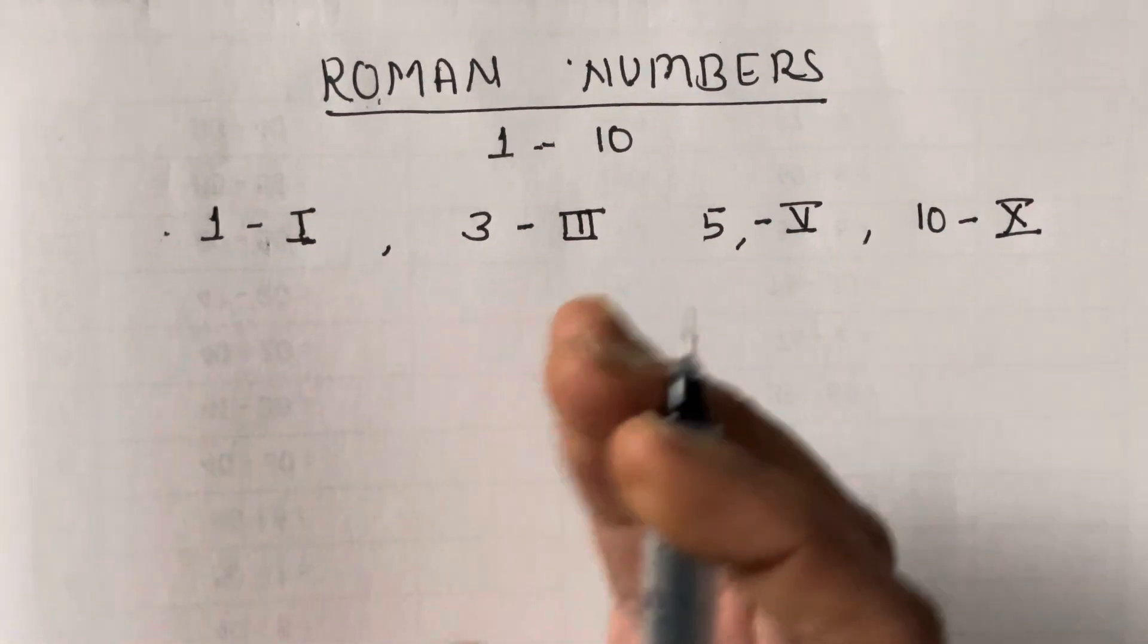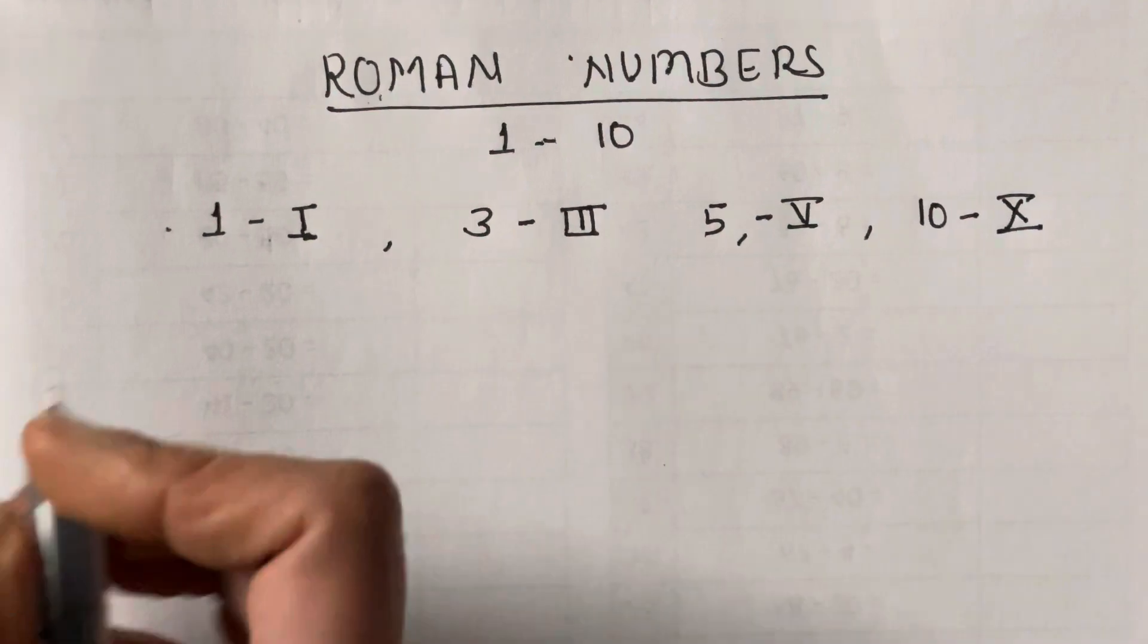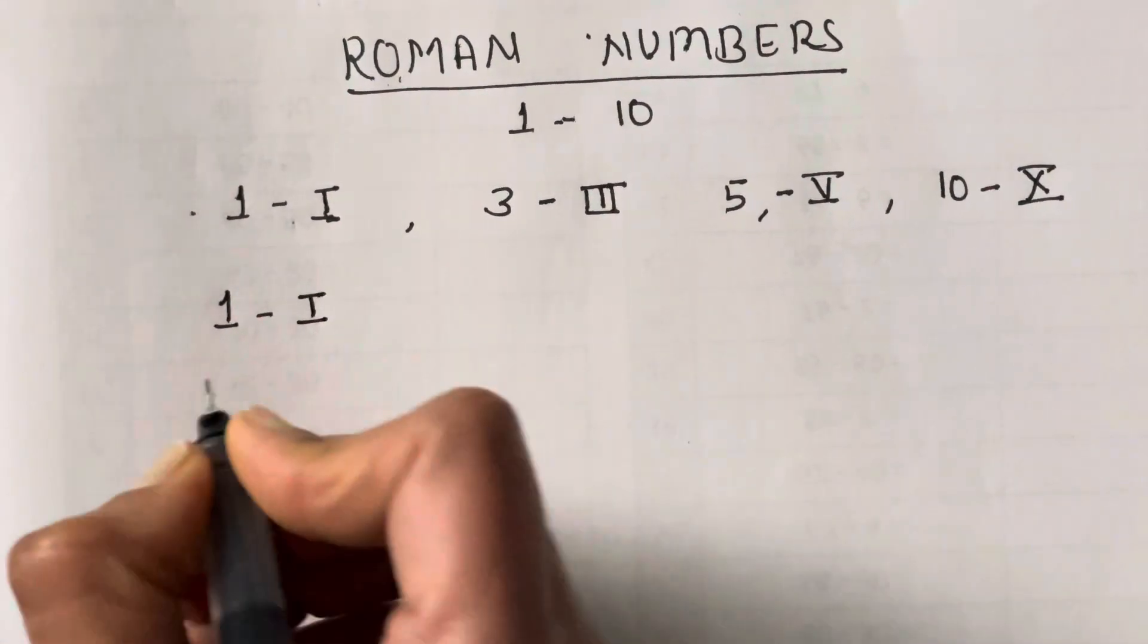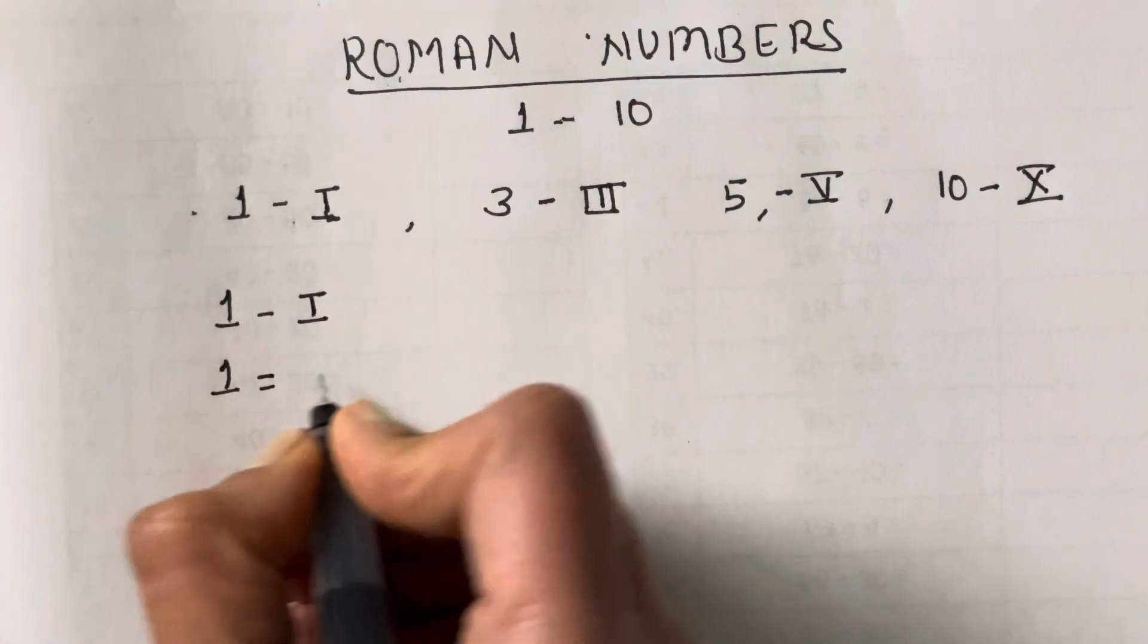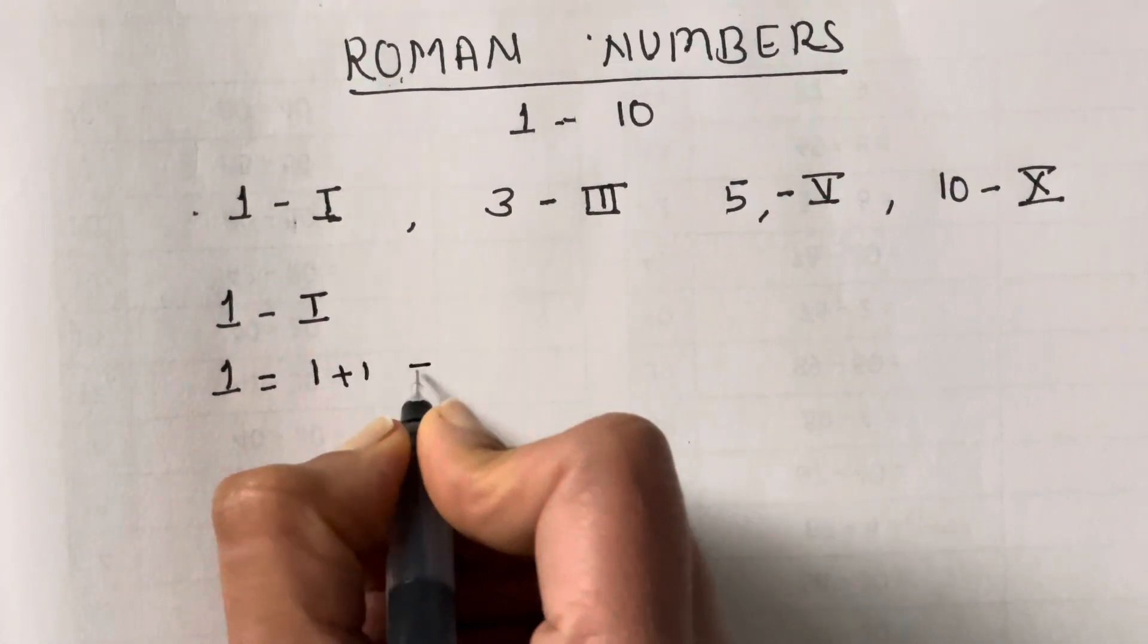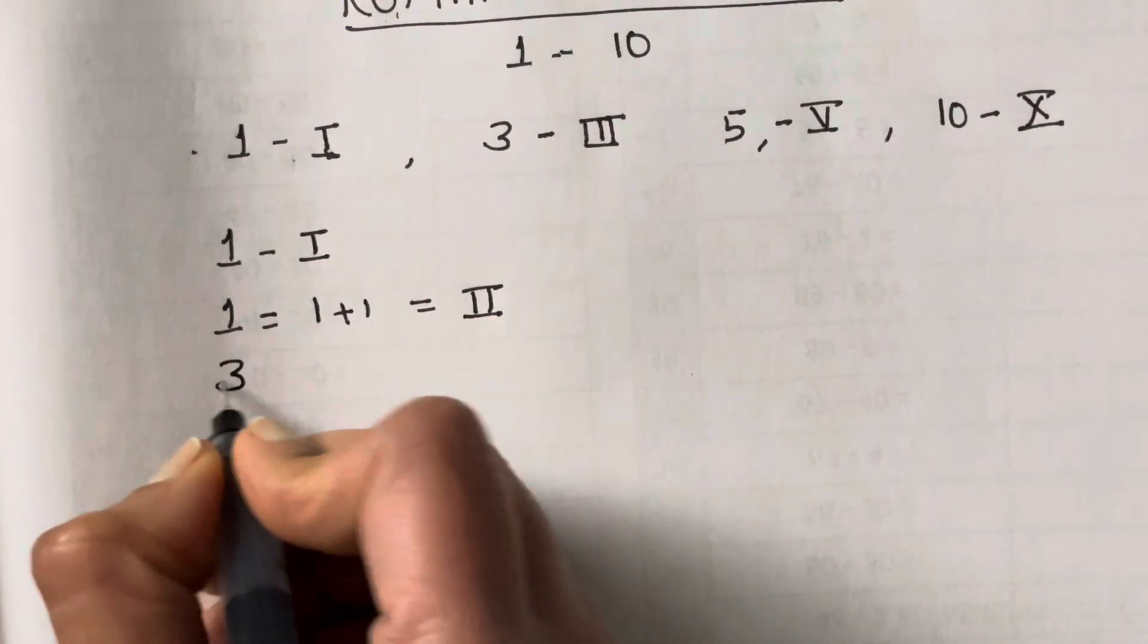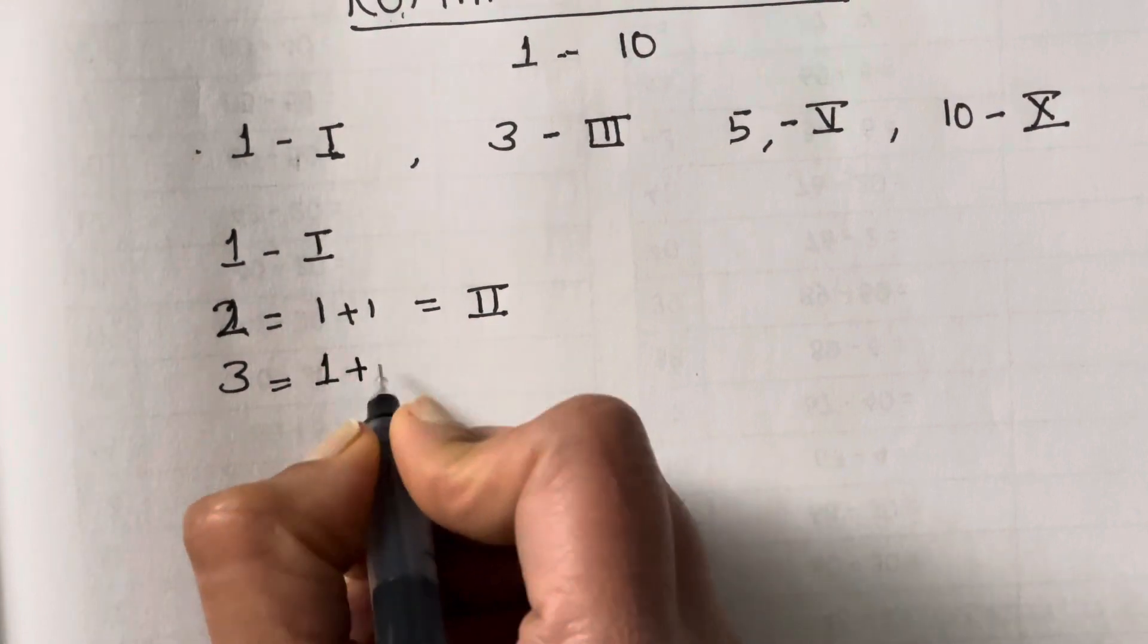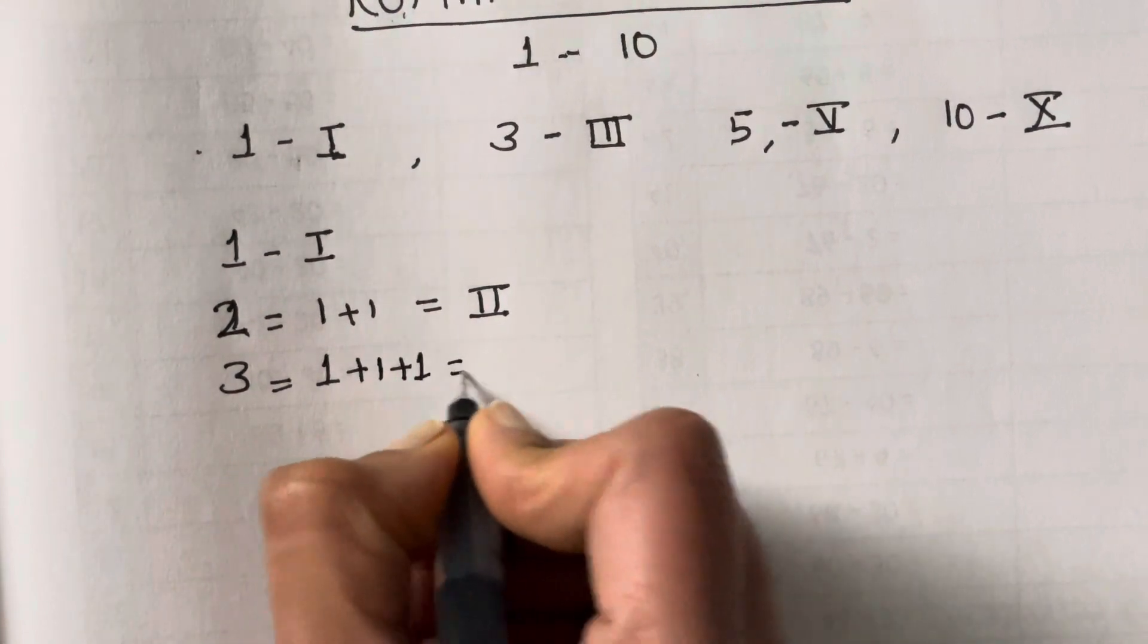So 1 is I. 2 you can write as 1 plus 1, so it will be two I's, which is II. And then 3 is 1 plus 1 plus 1, which is III.